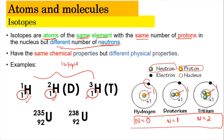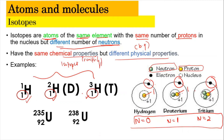Since isotopes have the same number of electrons — one in each case here — they have the same chemical properties but different physical properties. Physical properties include things like boiling point, while chemical properties include reactivity. Isotopes are not limited to lighter atoms; they can also involve very heavy atoms, such as uranium, which has isotopes with the same number of protons but different numbers of neutrons.